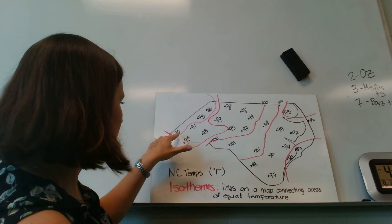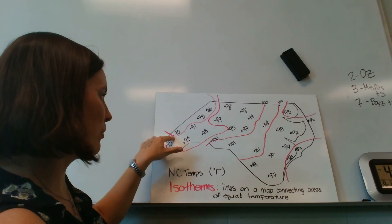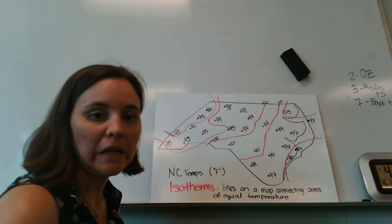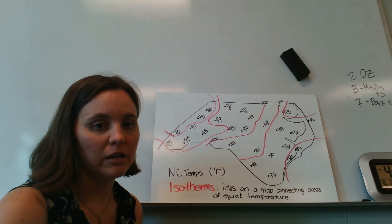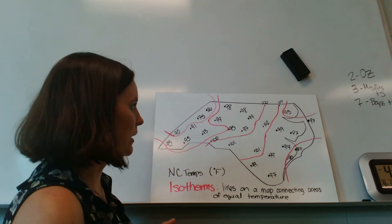So now I have five degree isotherms on my map. So this is my 90 degree isotherm. Even though I only had one 90 degree on my map, I could figure out by knowing which numbers on a number line 90 degrees falls between, I could figure it out and I could place it in on the map. Kind of a little bit of guesswork.